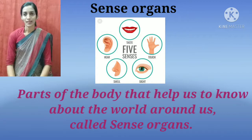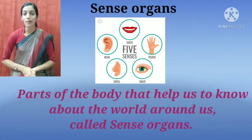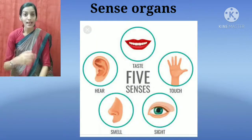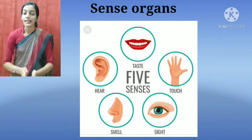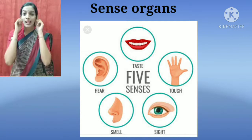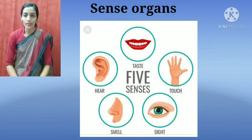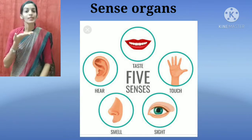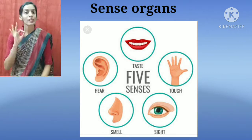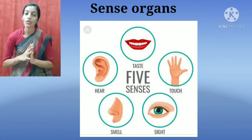Sense organs are parts of the body that help us to know about the world around us. Eyes help us to see. Ears help us to hear. Nose helps us to smell. Tongue helps us to taste. And the skin helps us to touch or feel.